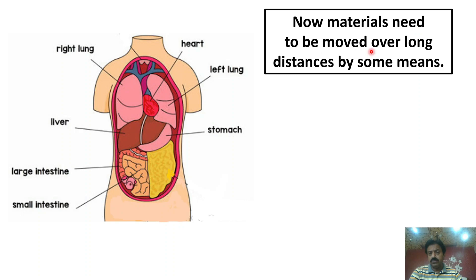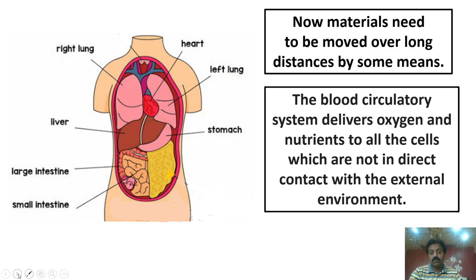Materials need to be moved over long distances by some means, and that means is blood — the blood circulatory system. The blood circulatory system delivers oxygen and nutrients to all cells which are not in direct contact with the external environment — for example our stomach, liver, and intestine.